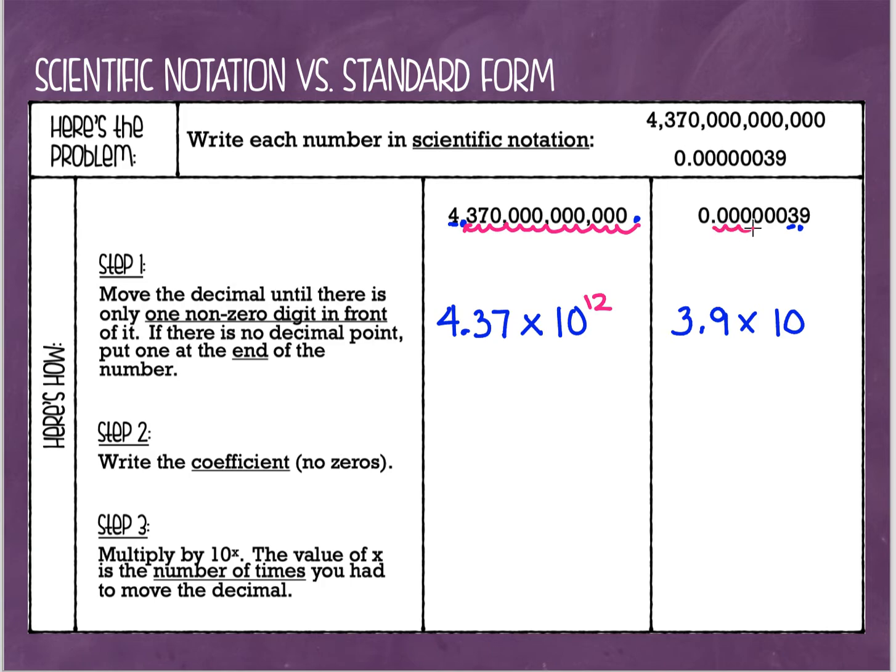So positive 7 is my exponent. Oh, wait a minute, not positive 7. This number started out as a decimal, a really small number. So what kind of 7 do you think that should be right there? Hopefully you realize that it should be a negative 7, not a positive 7, but a negative 7. So very large numbers have positive exponents and very small numbers have negative exponents.